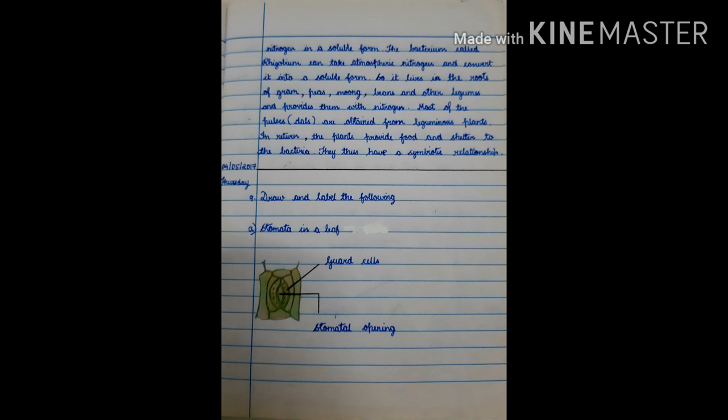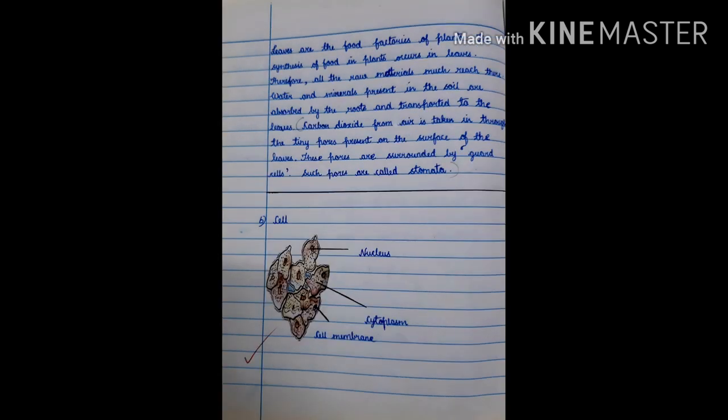Ninth question. Draw and label the following. A. Stomata in a leaf. This is the diagram of stomata. Leaves are the food factories of plants.